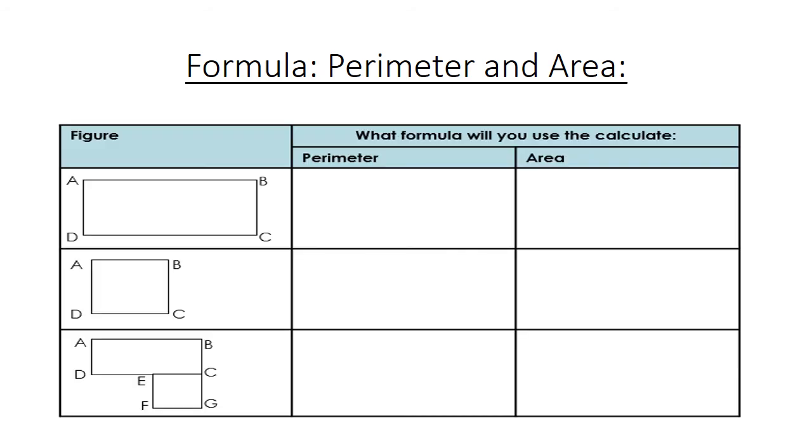Formula. The perimeter and area. What formula will you use to calculate the following? The perimeter is the outside of a 2D. For this figure, the first one, the perimeter is AB plus BC plus CD plus AD. Or in short, the perimeter equals 2 times the length plus the breadth.